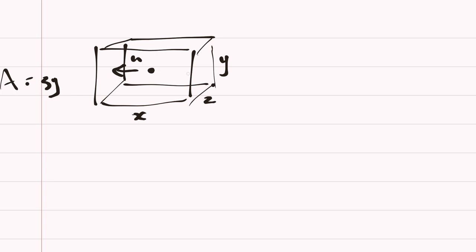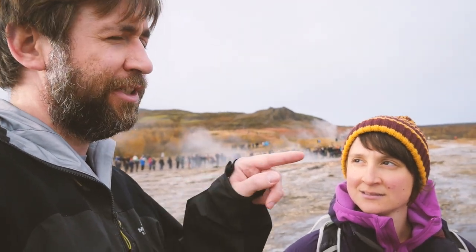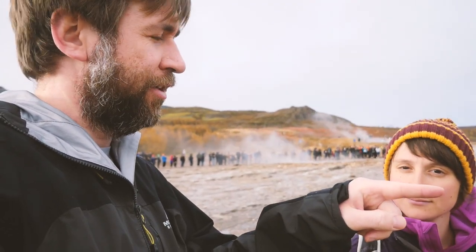The particle has mass m and speed u, so its momentum is mu. It has a change in momentum of minus 2mu when it hits this wall. Newton's second law defines force as change in momentum over time. So when the particle hits the wall and comes back, its momentum has changed — it has done a force on the wall.